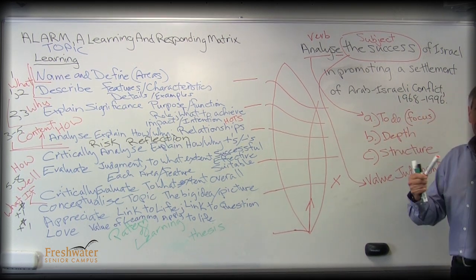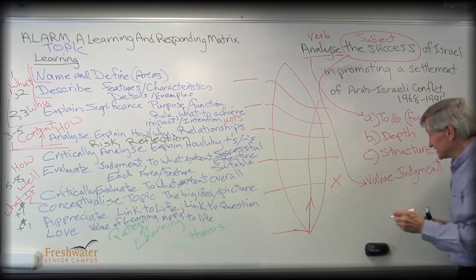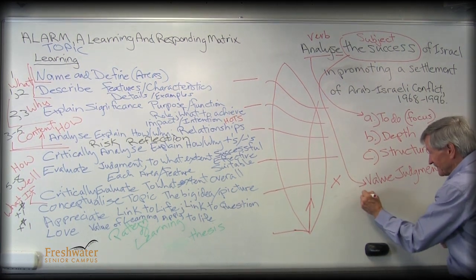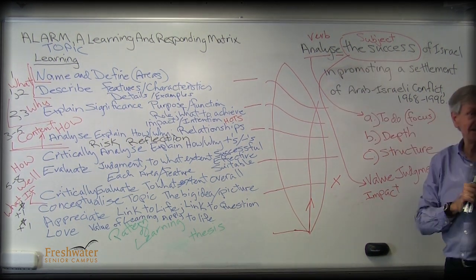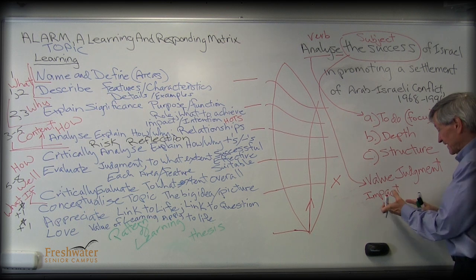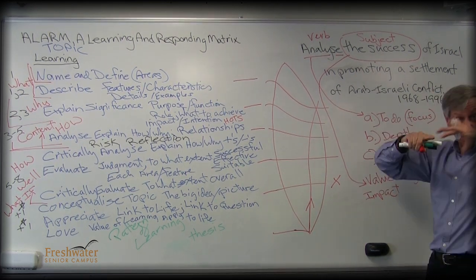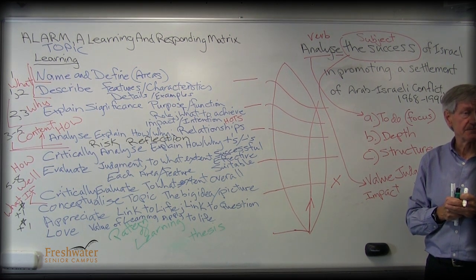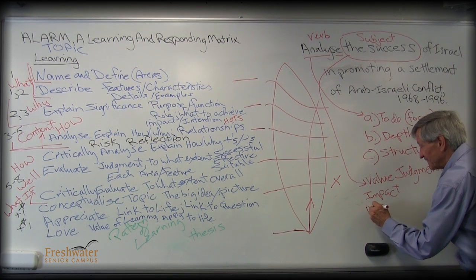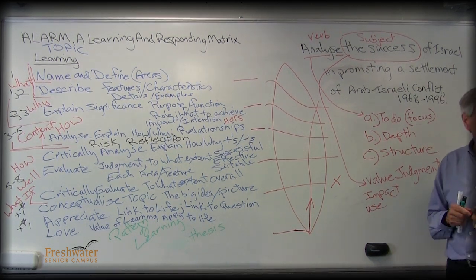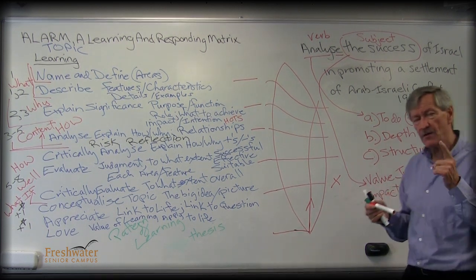There are certain words in every subject that by the word itself imply they must make a value judgment — they must come to an evaluation of, to what extent was it in this case successful. So I asked my deputy again: can we get a list? Every teacher, make me a list of the words you use in your subject that imply you must make a value judgment. Words like success, effective — and this one I hadn't thought about until I saw it: impact. 'Analyze the impact' — you would have to make a value judgment as to the extent that the impact occurred. And other words like 'use' or 'useful' — 'analyze the use of something' — can imply a value judgment.